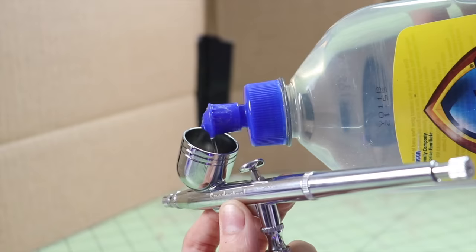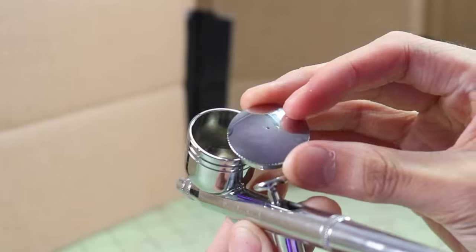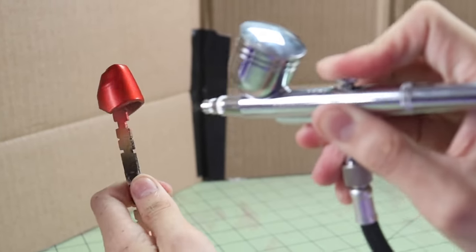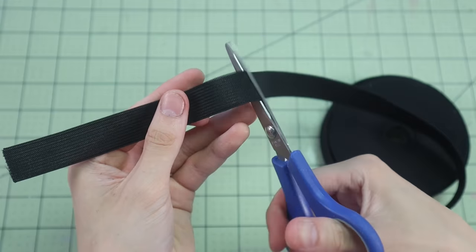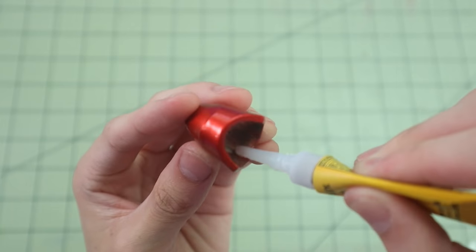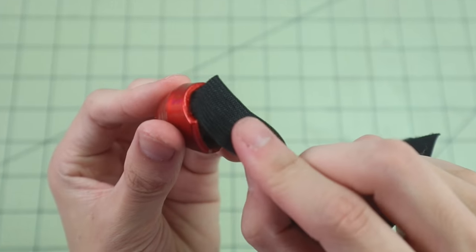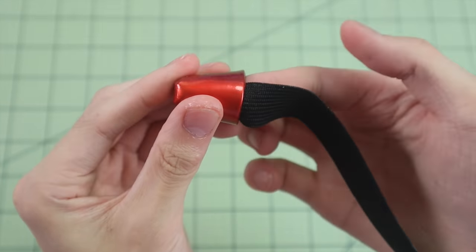Once the paint dried, I went over everything with two layers of Pledge Floor Gloss, which you can apply with a brush, but I just used a cheap airbrush to speed things up. From here, I'm now going to string together all the finger joints using some black fabric elastic, which I used super glue to attach on.